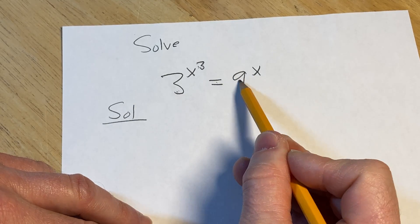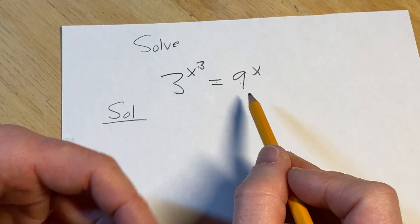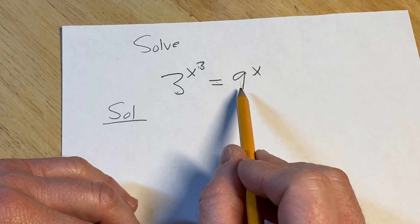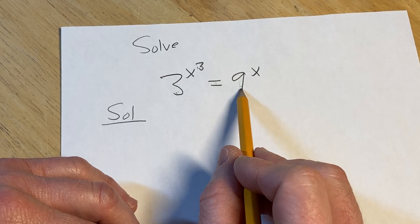So because we have a 3 here and a 9 here, one strategy we can use to solve this problem is to write both sides using the same base. So we're going to use the base of 3, because 3 squared is 9.